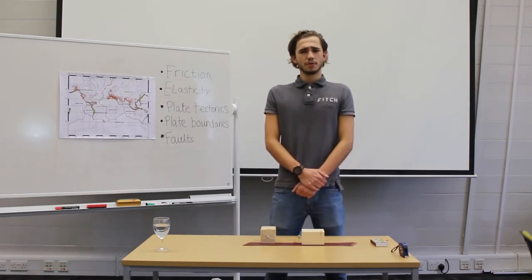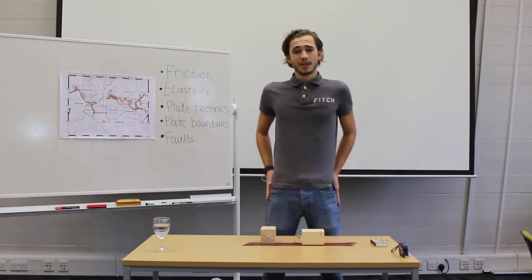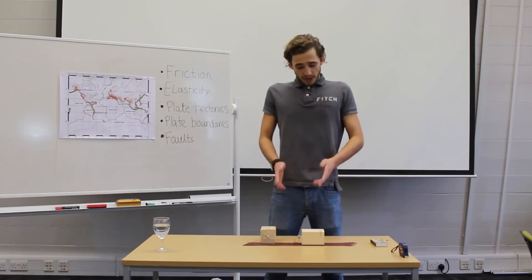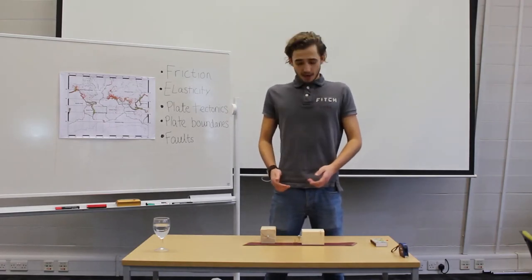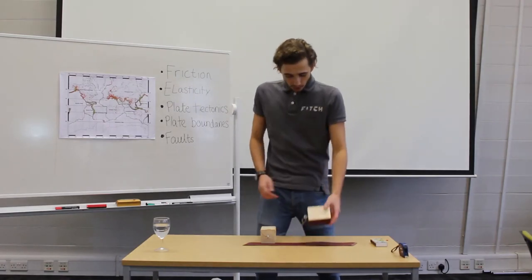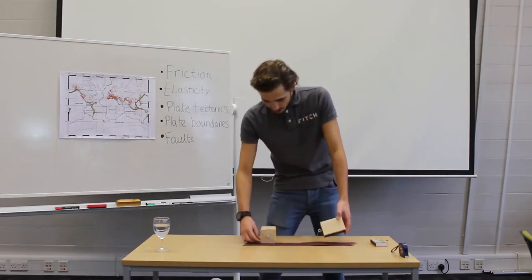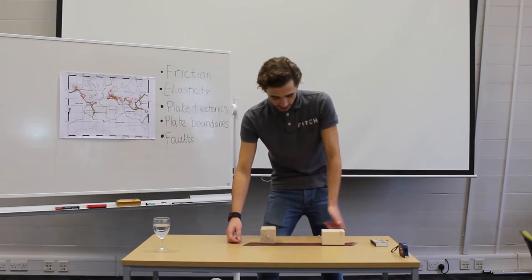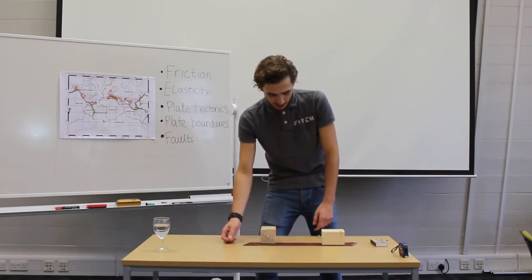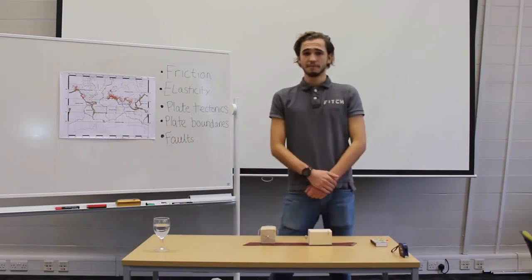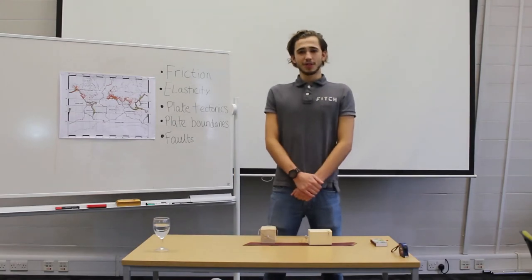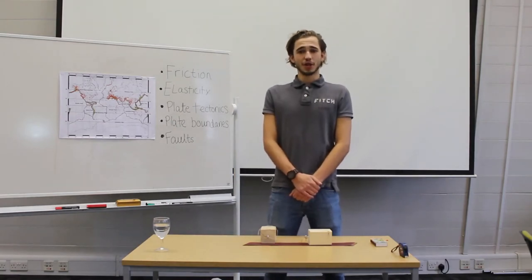Now you may ask yourself, what has this got to do with earthquakes? Good question. Take a minute now to discuss what each of the components represents in a real fault system. So what does the block represent? What does the two sand surfaces represent? The steady pulling of the string and the elastic band. And finally, what does the movement of the block represent? Can this movement be predicted? Discuss these questions now and we'll return shortly to see how well you did.